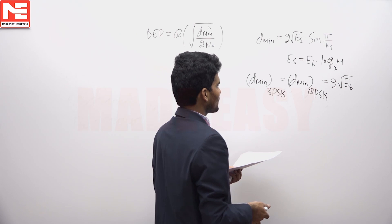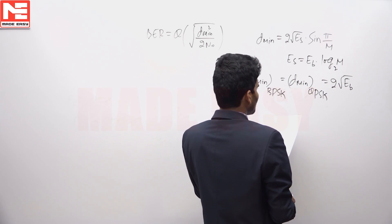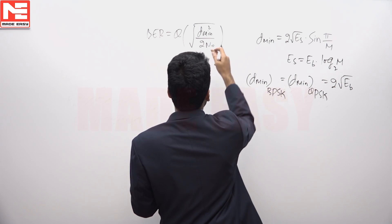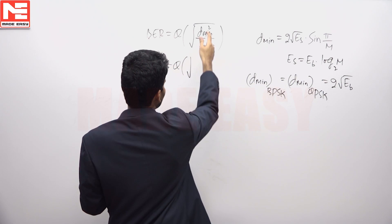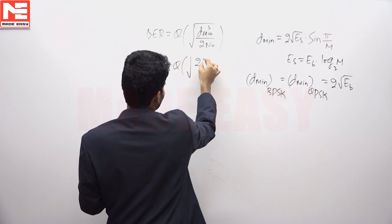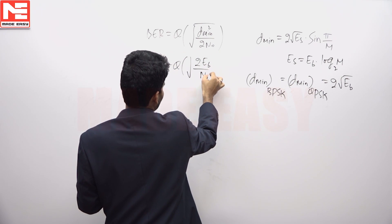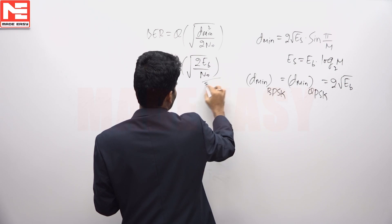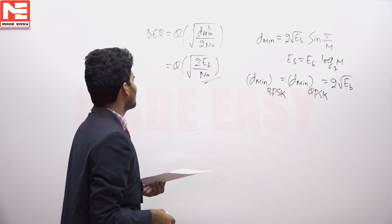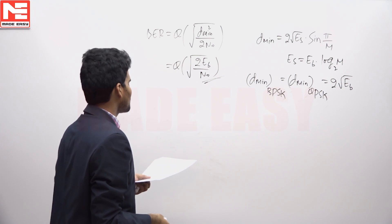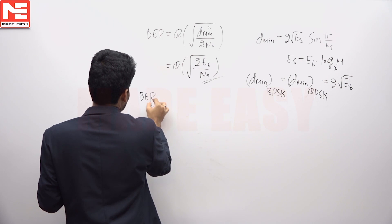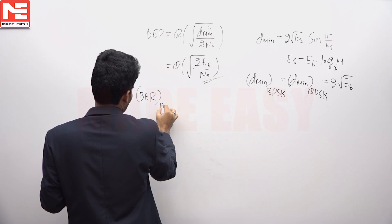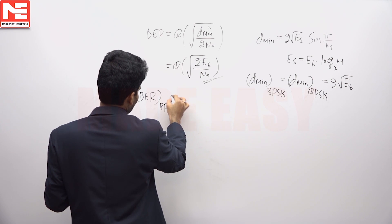By substituting here, Q of under root of D min equals 2 root EB. If you substitute this, this is 2 EB by N0. We get for BPSK and QPSK the bit error rate expression will be the same.